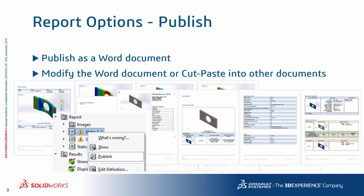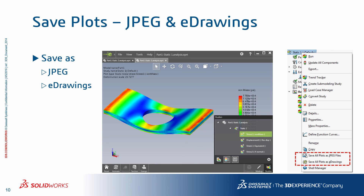Publish will create a Word document based on your report options. You can expand this Word document with any additional content, or cut and paste the data from this document into another document — perhaps another template in the format required by your own company and reporting guidelines. Beyond generating a Word document, you can also save all plots as JPEG files, or use the powerful eDrawings tool from SOLIDWORKS to save simulation plots and preserve and share them.